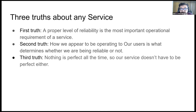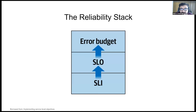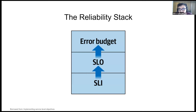So how do we manage this situation? Reliability is the most important requirement of a service, and it's okay not to be perfect all the time. We need a way to think about these truths. We have limited resources — financial, human, or political — and one of the best ways to account for these resources is via what is called a reliability stack. The basic reliability stack starts with service level indicators, or SLIs.